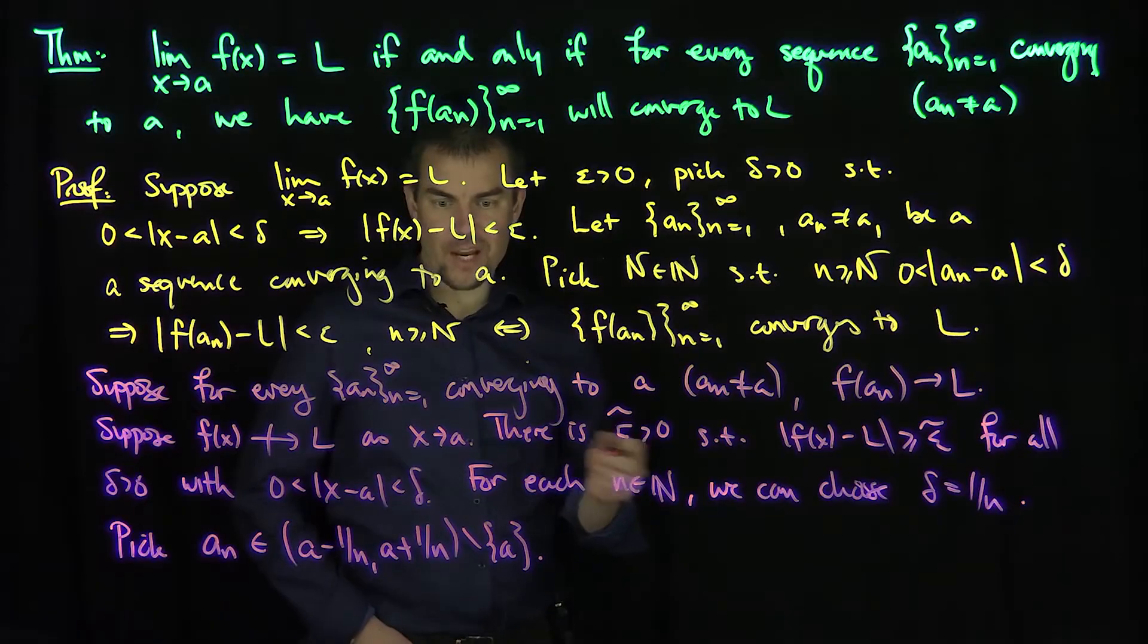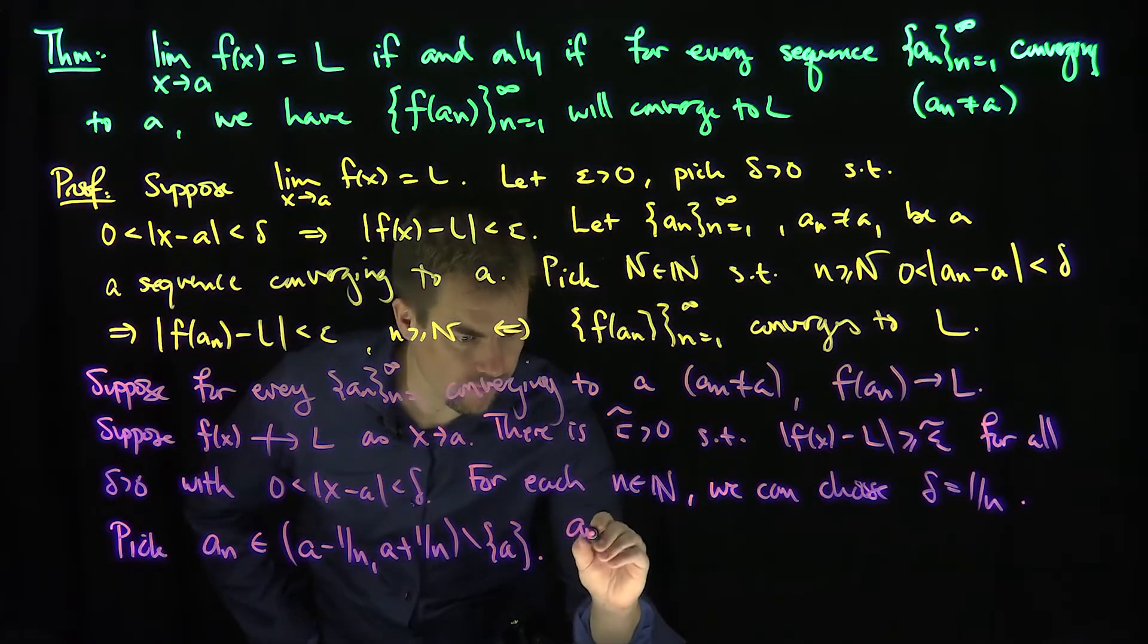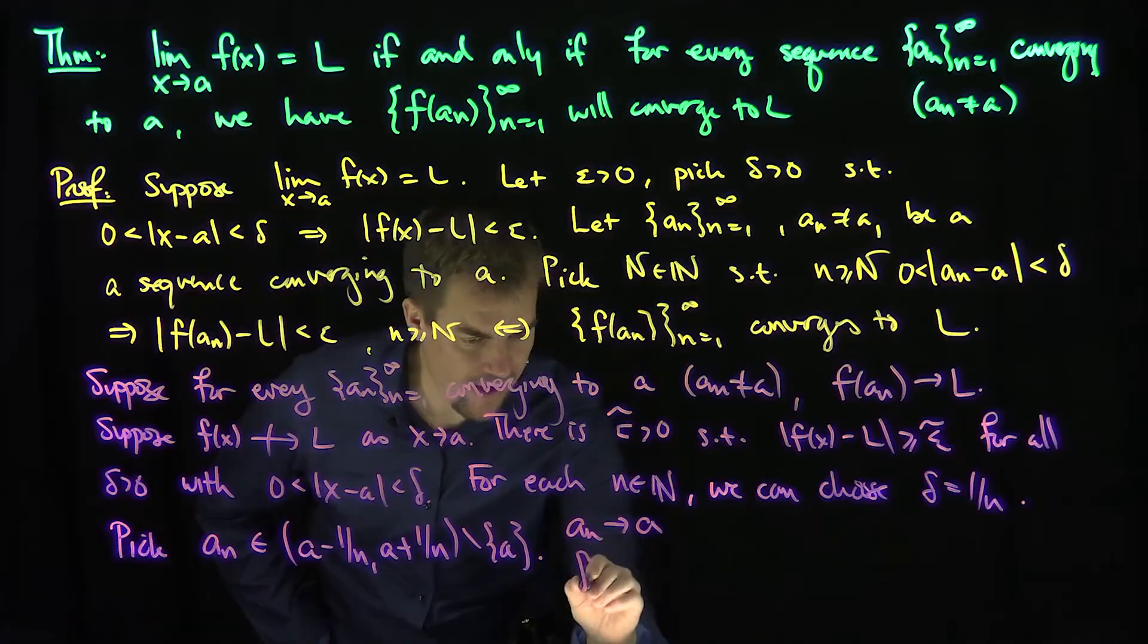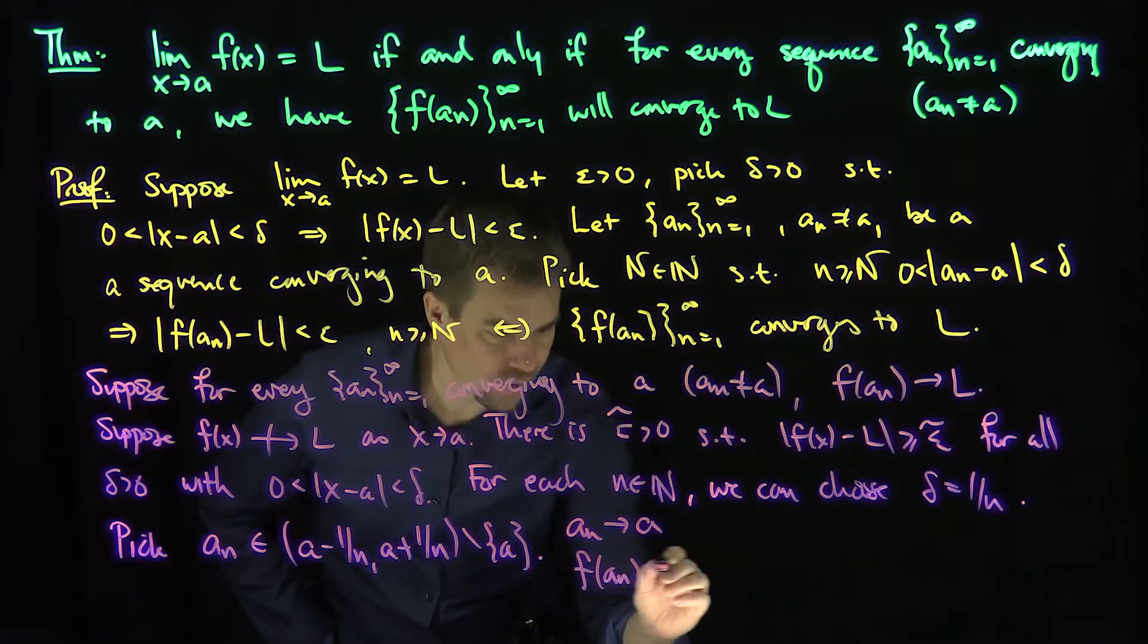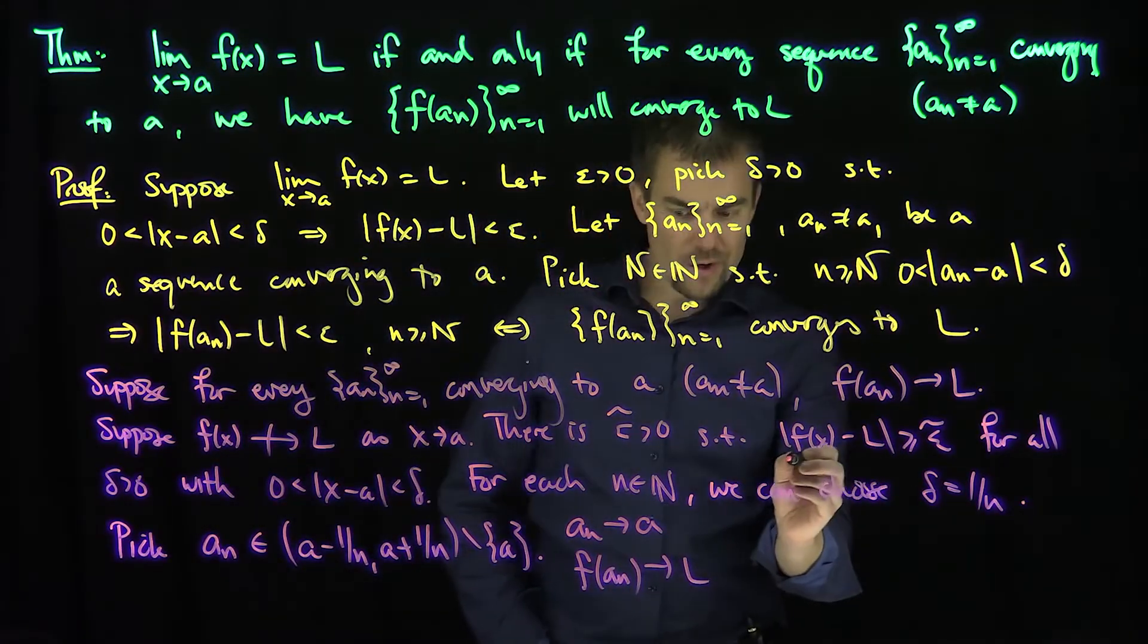But what's happening? This sequence is converging to a. This aₙ will converge to a. And the {f(aₙ)}, by assumption, will converge to L.